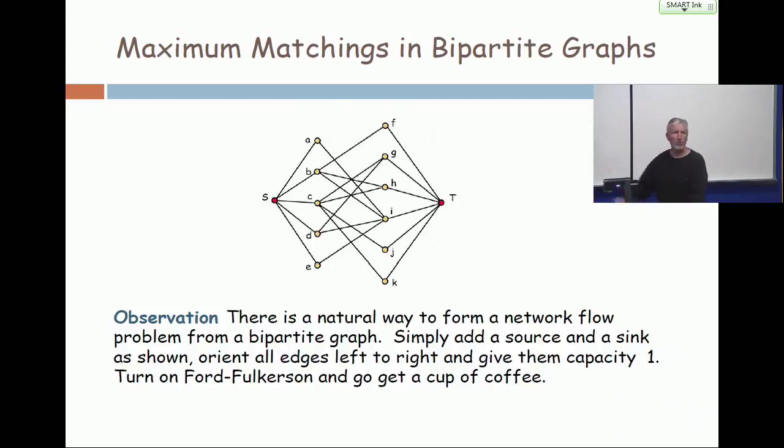Because Ford-Fulkerson will find a maximum flow in that and that flow will be integer valued. So certain edges will have flow one on them and they will form a matching. There's nothing new here. This is just a special instance of what we have already studied.